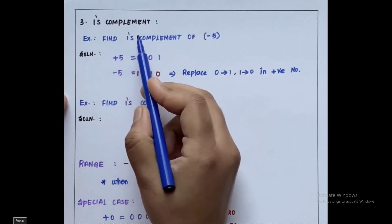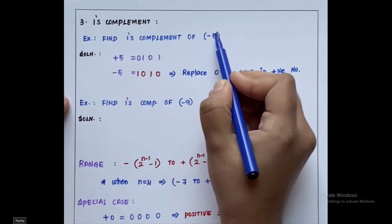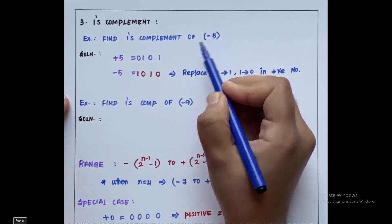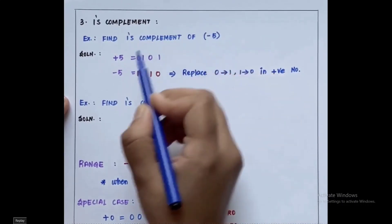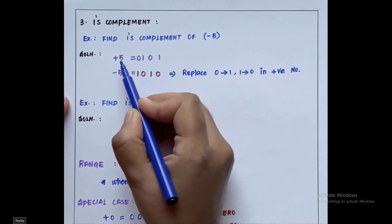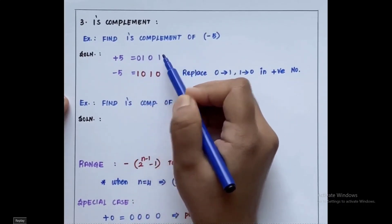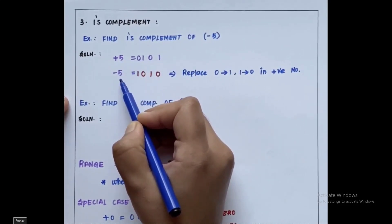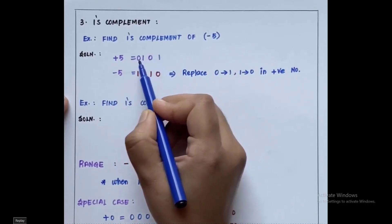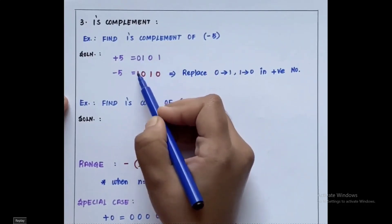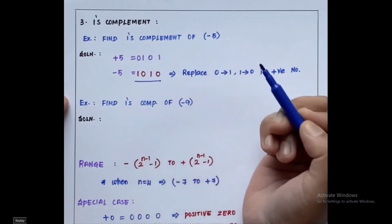Now let us see 1's complement. Example: find the 1's complement of minus 5. Minus 5 is a negative number. First, write the value of 5 in binary — plus 5 including the sign bit is 0101. For minus 5, we write the 1's complement by replacing 0's with 1 and 1's with 0. Replacing gives us 1010, which is the equivalent 1's complement for minus 5.